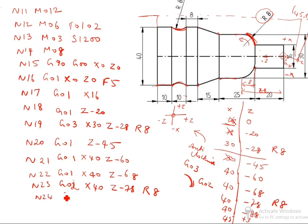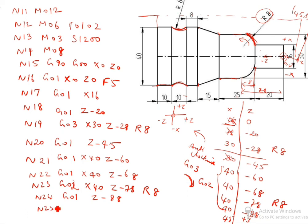N24: G01, Z minus 88. Otherwise you can write X40 Z minus 88. Or don't write X40 also — it's already coming 40, 40, 40, 40, so don't write again. N25: G01. Now up to here finished.